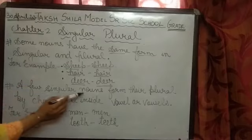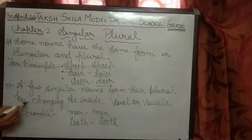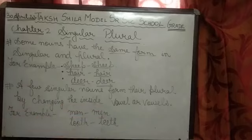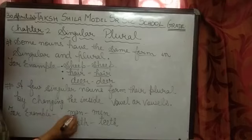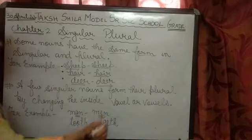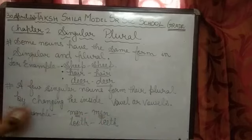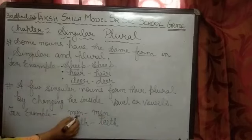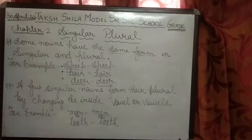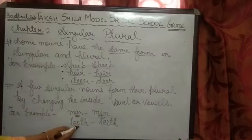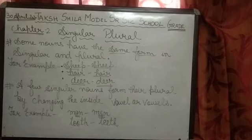Come to the next rule. A few singular nouns form their plural by changing the inside vowel or vowels. There are some nouns which change their singular form into plural by changing the inside vowel. For example, man becomes men — A changes into E. Similarly, tooth becomes teeth, and foot becomes feet. There are many more examples to change singular into plural using this rule.